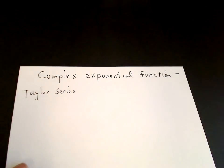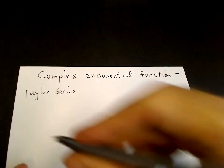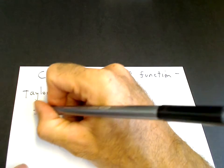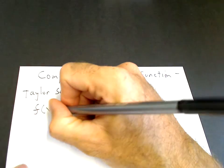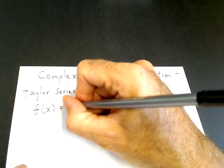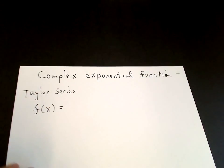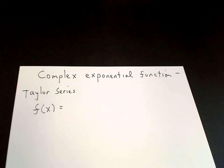The Taylor series of the function f of x, about x equals 0, is a power series — meaning it's a series in powers of x: a constant, plus a constant times x, plus a constant times x squared, plus a constant times x cubed, etc.